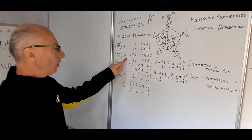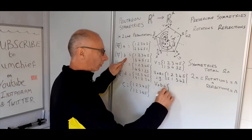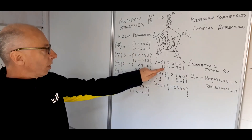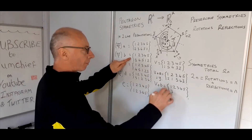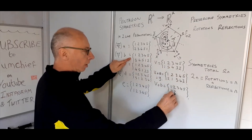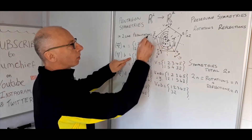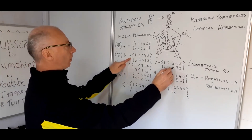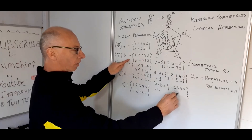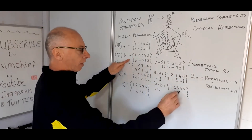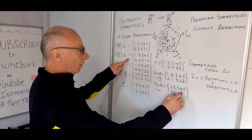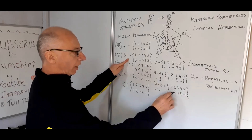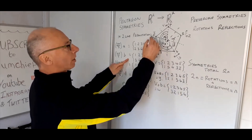Now V composed with B. For 1: V sends 1 to 1, B sends 1 to 3. For 2: V sends 2 to 5, B sends 5 to 2 — so 2 stays fixed. This looks like reflection W. Continuing: 3→4, then 4→1; 4→3, then 3→5; 5→2, then 2→4. Since 2 remains unchanged and the others all flip, this is our W reflection.